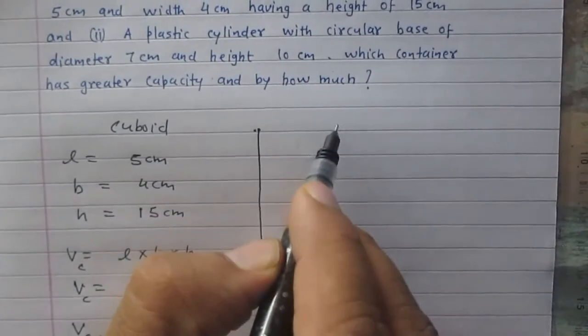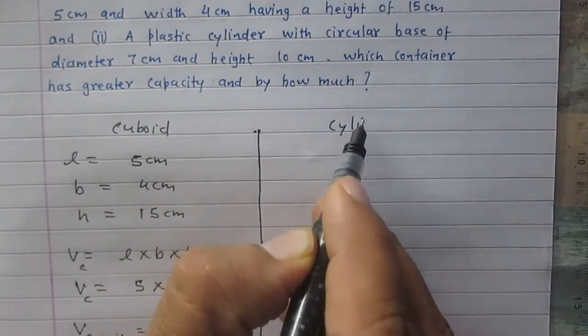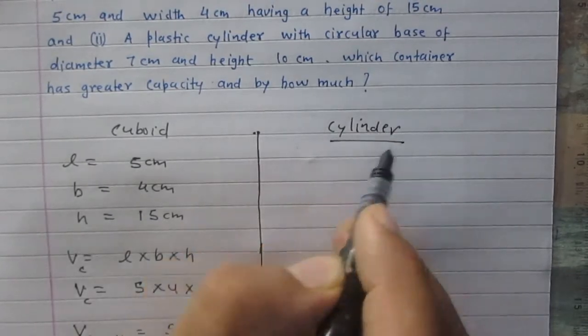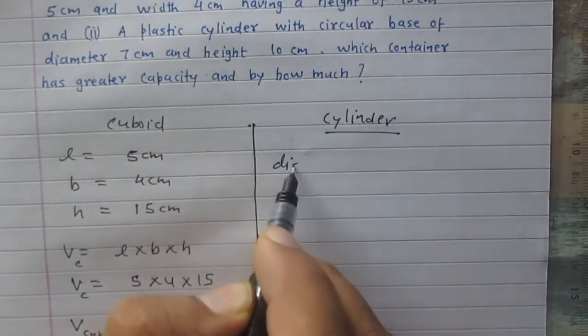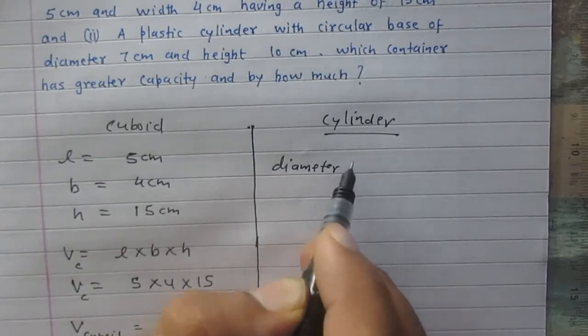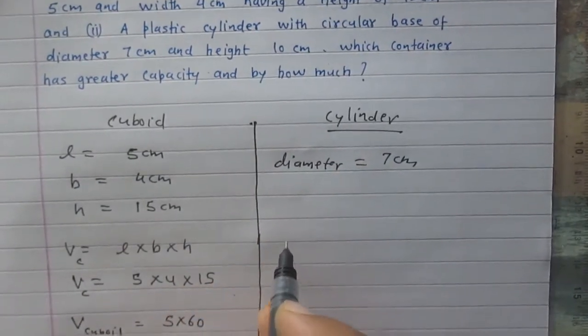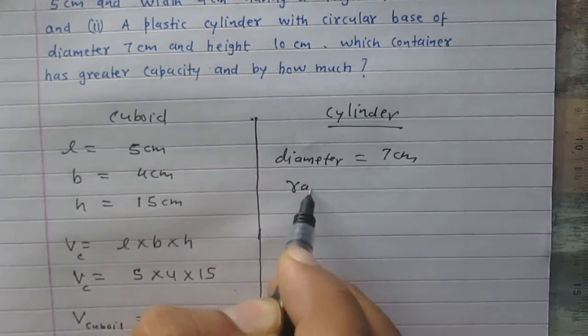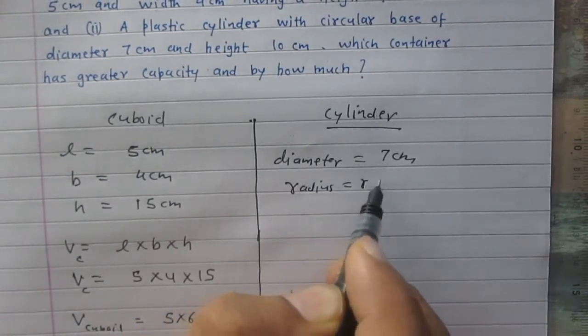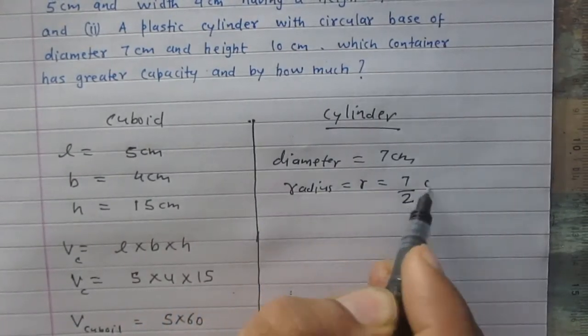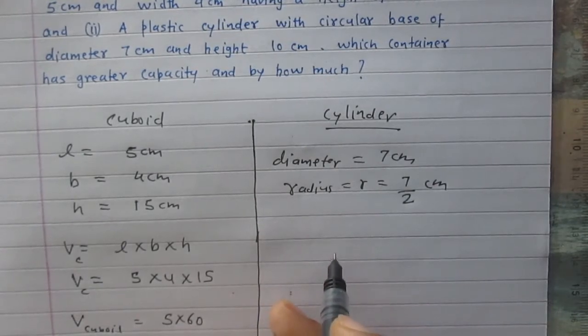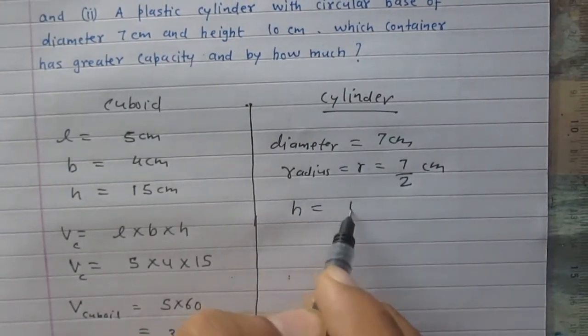Now the second solid is a cylinder. Its diameter is 7 cm, so its radius is 7/2 cm. The height of this cylinder is 10 cm.